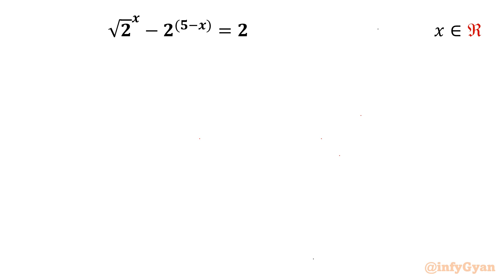Welcome back to Infigyan friends. Today in this video we are going to take up one challenging question from exponential equations. It is: square root of 2 to the power x, minus 2 to the power 5 minus x, equal to 2. And we have to find out real solutions only.